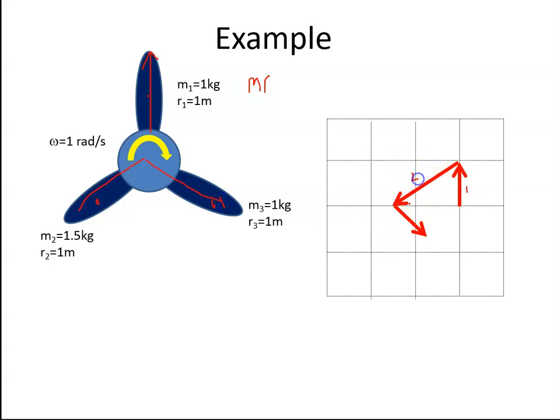So if we want to balance this propeller, then we would have to add in a weight and its position, so that the vector will bring it right back in here, and we get zero, so we get no vibration. So we're looking for an answer like that, like this purple line.